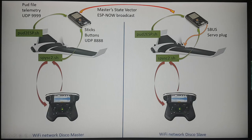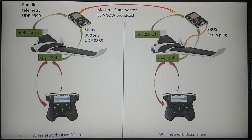Now that you can compute the trajectory of the slave compared to the motion of the master, you have to activate the throttle, the pitch, and the roll of the slave in order to follow this trajectory. This will be done using the S-BUS, which is accessible via the servo plug on the Chuck.